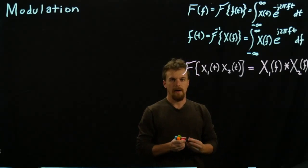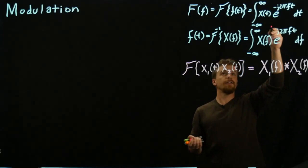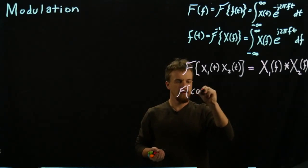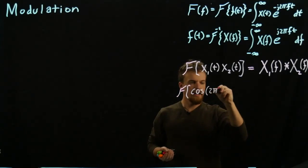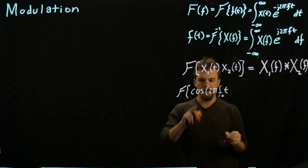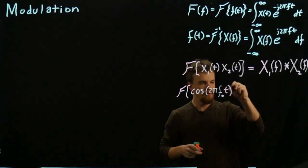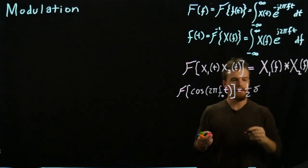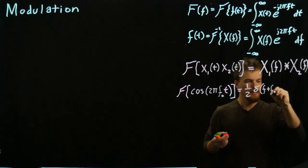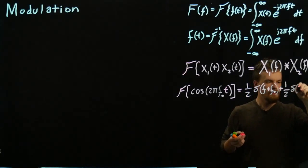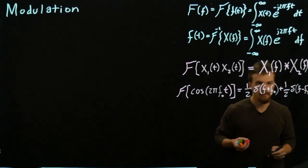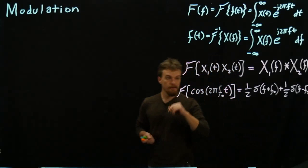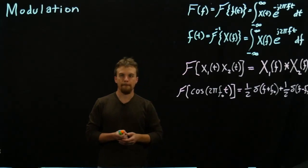Let's write down one other thing. We already know that the Fourier transform of cosine(2π f₀ t) — a cosine at a specific frequency f₀ — equals one-half δ(f + f₀) plus one-half δ(f − f₀). We'll draw this out graphically. It's two delta functions, and these are really the two identities we need to talk about modulation.